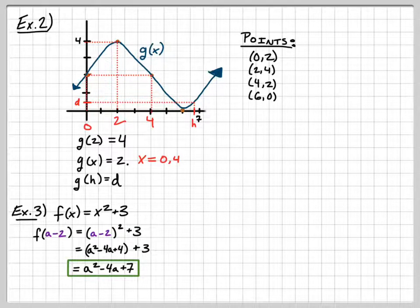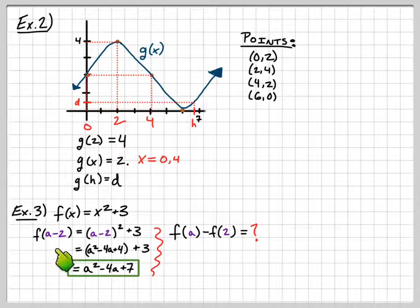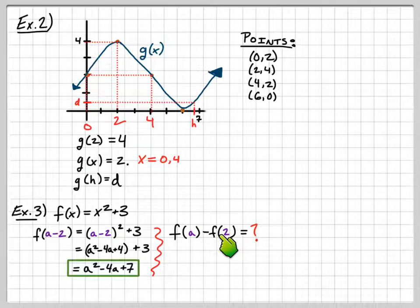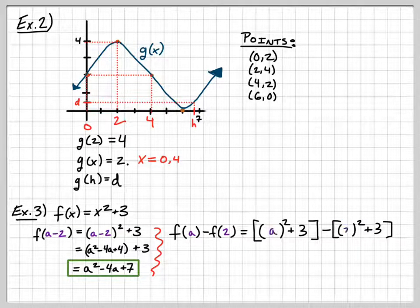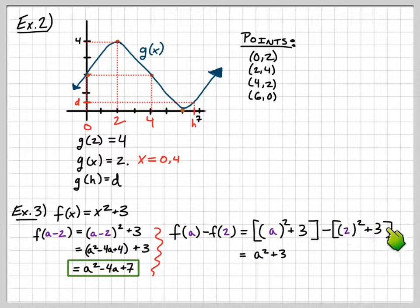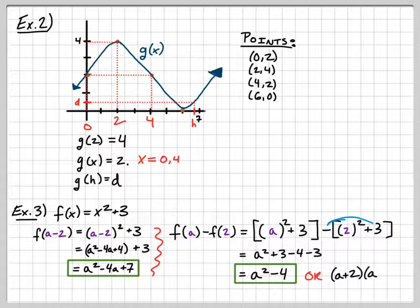Now I'll ask a different question: what is f of a minus f of 2? These are two separate functions evaluated individually. f of a gives a squared plus 3; f of 2 gives 2 squared plus 3, which is 7. Be sure to distribute the negative to both terms: a squared plus 3 minus 4 minus 3 equals a squared minus 4. This can also factor as (a + 2)(a - 2) — the difference of two squares.